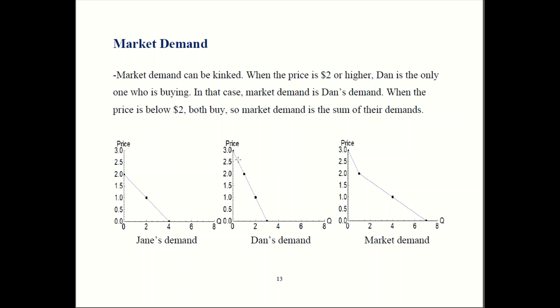Once price falls below two, Jane is going to enter the market and start buying stuff. That means that market demand becomes both Jane's demand plus Dan's. When the price is two, Jane buys zero and Dan buys one. So market demand is one. When price is one, Jane buys two and Dan also buys two. So market demand is two plus two, which is four, which gives us that point.